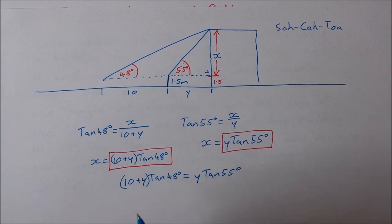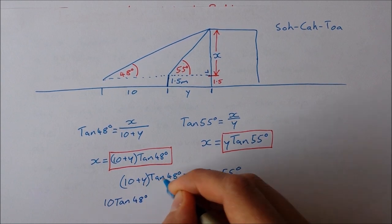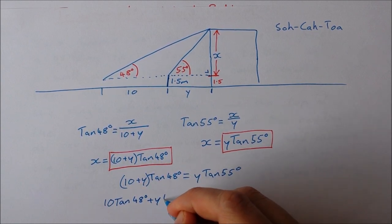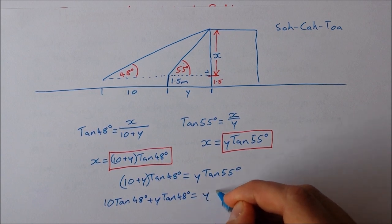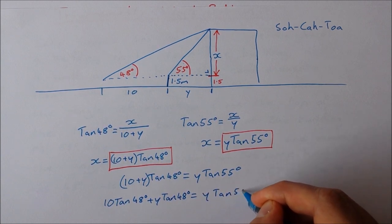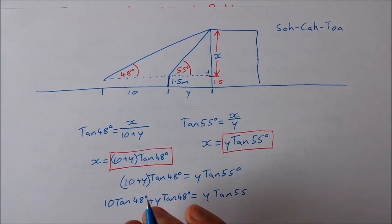First I'll have to multiply these brackets. 10 by tan 48 is 10 tan 48. Y by tan 48 is y tan 48, and y tan 55. Okay, let's get everything with a y to one side and leave that there.